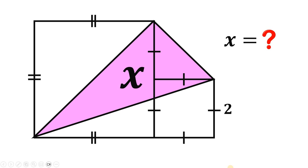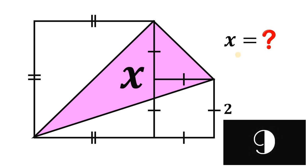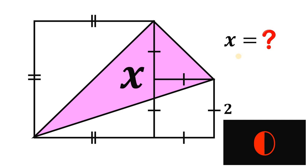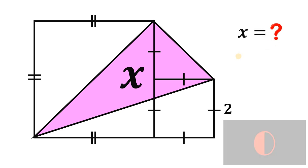Hello everyone, can you solve these questions suggested by one of our viewers? Here's the question. Now given these two squares, the question is: what is the area of the shaded region represented as x? You can pause this video if you want to give this problem a try. And now let's answer this question together.